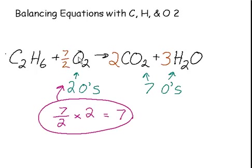Now we have seven over two times two, which are seven oxygens on the left. And we have seven oxygens on the right. The equation is now balanced.